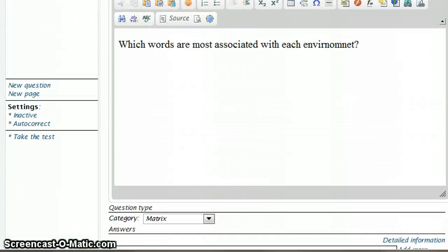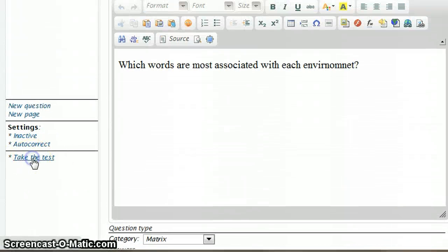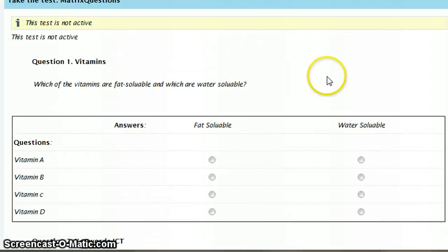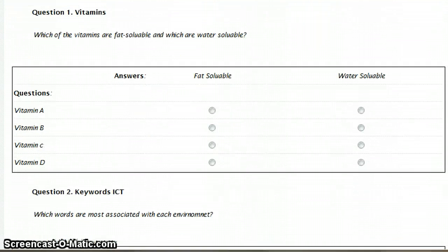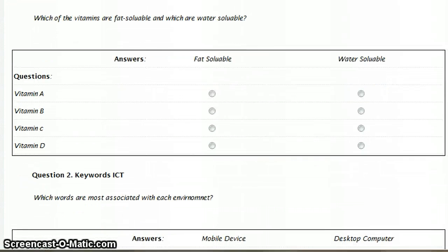All right, so now we've done that, let's take the test and have a look to see what these matrix questions look like. So here's one I've set up for vitamins - fat-soluble vitamins, vitamin A, vitamin D - these two go over here.